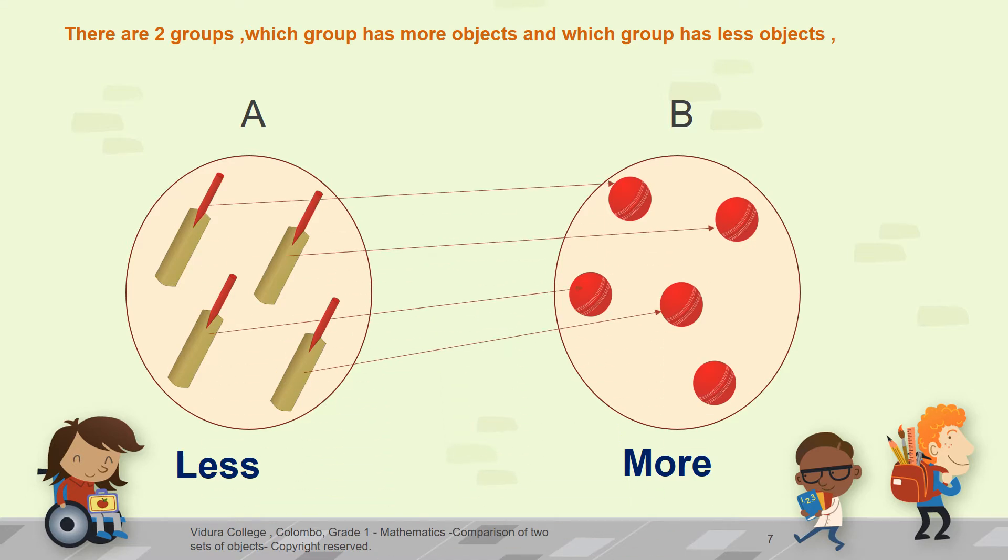Okay, is there any extra bat which has no ball? Or is there any ball which has no bat? There is only one ball left, right? So, as per this, there are more balls and less bats.